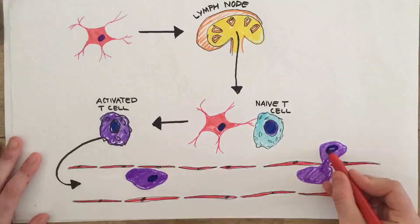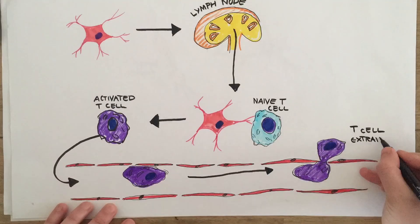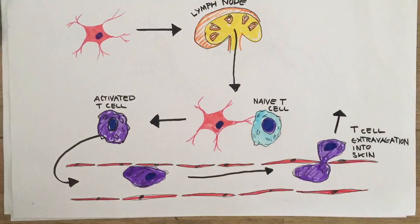These memory T cells migrate through the circulation to the site of inflammation. They do this using adhesion molecules like ICAM-1.